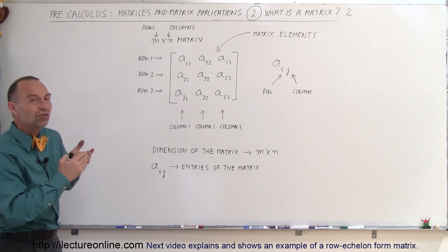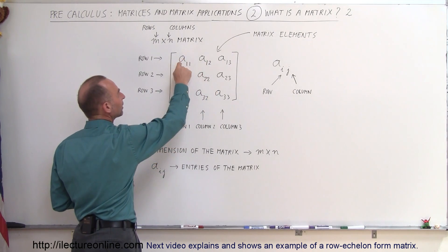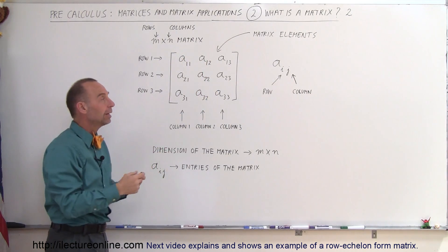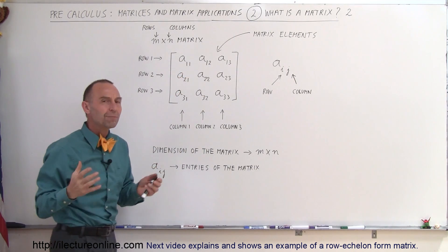So here we have a matrix in general format. Notice instead of having numbers, we have simply the letter A representing a number with a subscript. Here we have A sub 1,1, A sub 1,2, and so forth. So what does that mean?